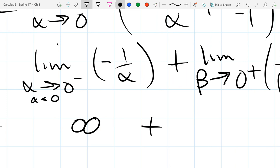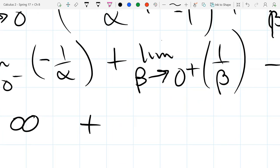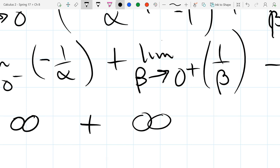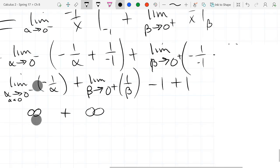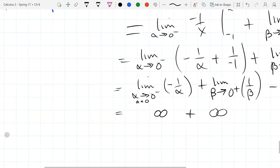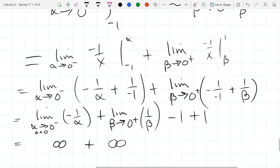What about our second limit? That one should be positive infinity also. Something went wrong. One of these should be negative infinity. Where do we go wrong?